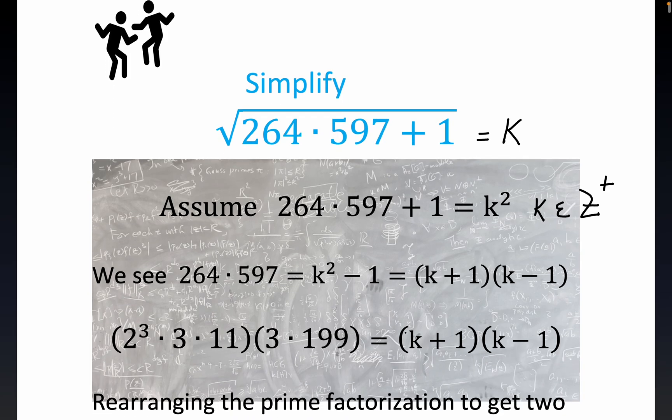So anyway, what happens here when we make this assumption, we get this nice difference of two squares result. If you subtract one from both sides, you get this value right here is equal to k squared minus one, so we get that this product 264 times 597 is going to be the product of two integers that have a difference of two.